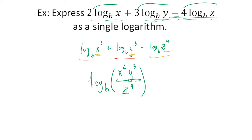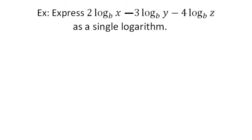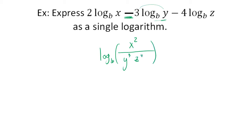If we change just the sign of the y term — making it negative — then after bringing the exponent up, y cubed goes into the denominator instead. So the result becomes log base b of (x squared divided by y cubed times z to the fourth).